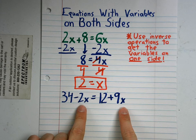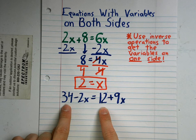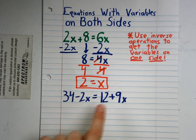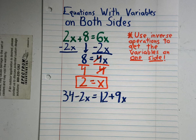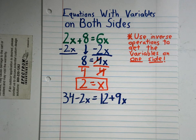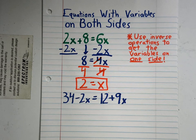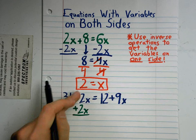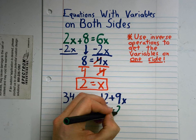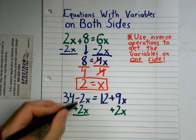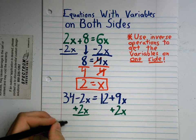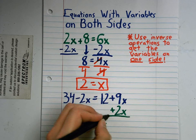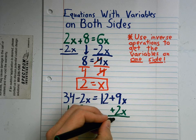This time I have variables on both sides of the equal sign and constants on both sides of the equal sign. But we're still going to do the same thing — use inverse operations to get the variables on one side and the constants on the other. I have a negative 2x and a positive 9x. The easiest way is to add 2x to the negative 2x side. The inverse operation of subtraction is addition. So I add 2x on both sides. Negative 2x plus 2x is 0, so I bring down my 34, and 9x plus 2x equals 11x.